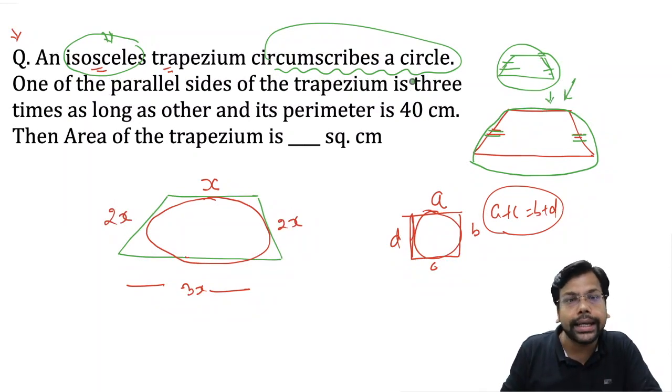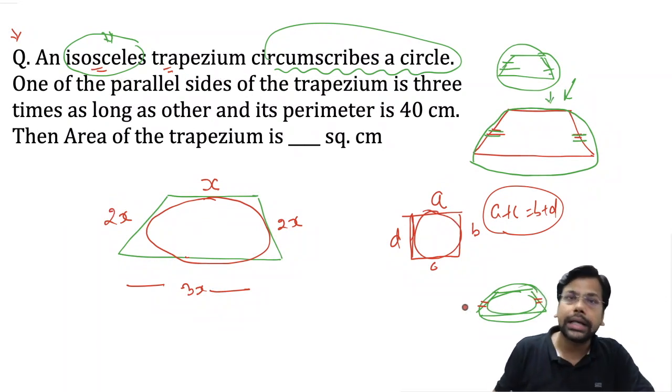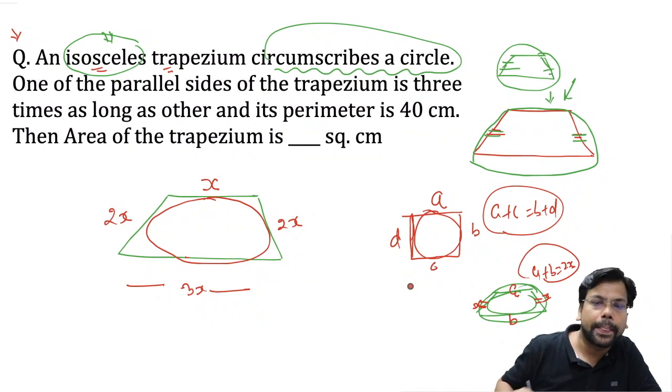If someone says there is a trapezium inside a circle, it means this is isosceles trapezium. If this side is A and B, and these are x and x, then A plus B is 2x.